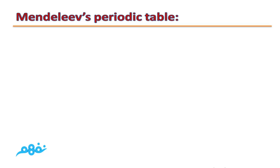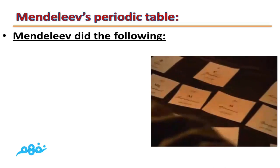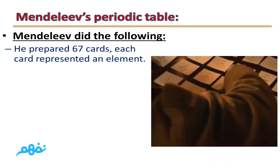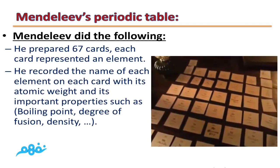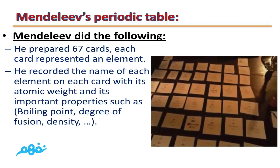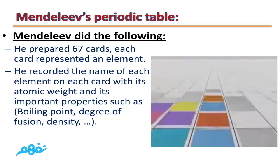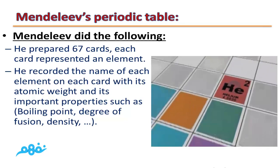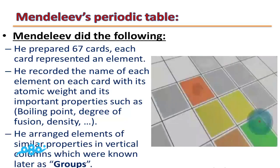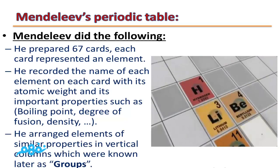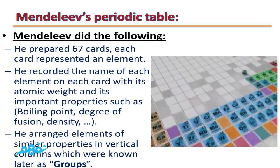We will start with Mendeleev's Periodic Table. Mendeleev prepared 67 cards, each card representing an element. He recorded the name of each element with its atomic weight and its important properties such as boiling point, degree of fusion, and density. He arranged elements of similar properties in vertical columns, which were known later as groups.